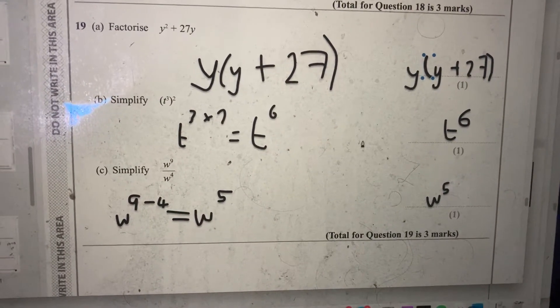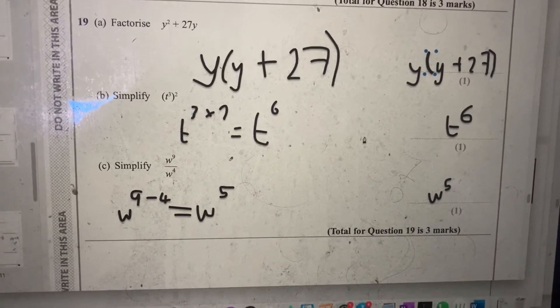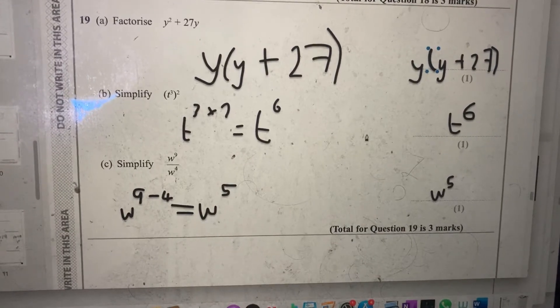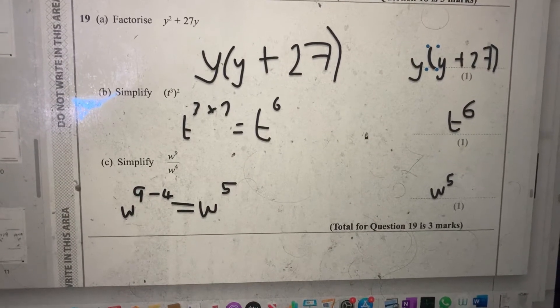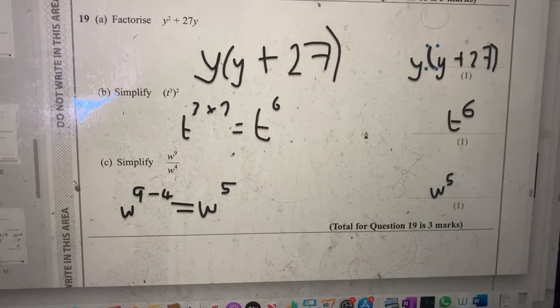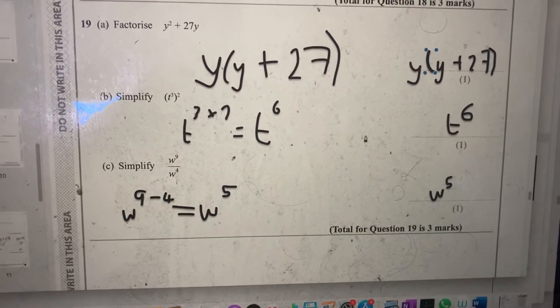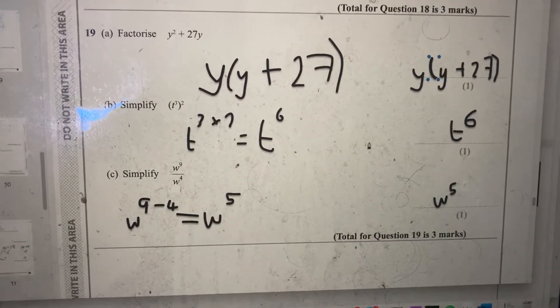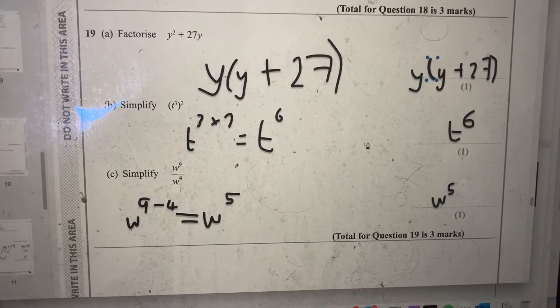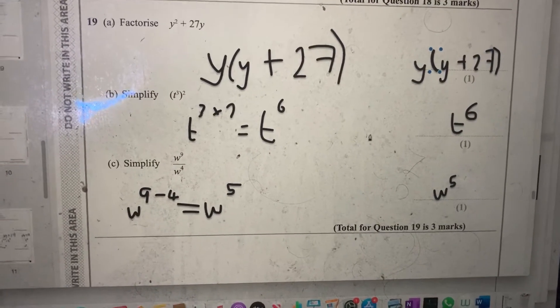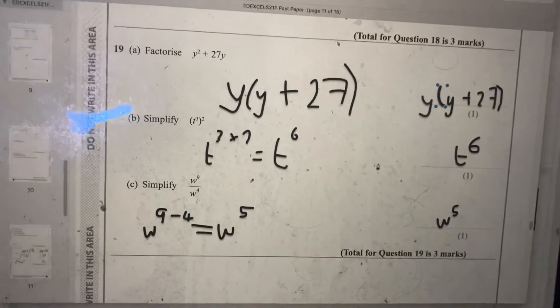This is question 19. Part a says factorize y squared plus 27y. That'll be a single bracket, so I take y out as a factor and it's brackets y plus 27 brackets closed. I can check my answer by expanding the bracket. So that is my answer for part a.